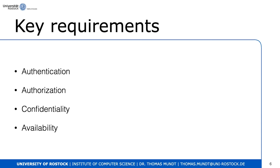Confidentiality means keeping secret information within a desired group of recipients — not everybody can read the message, only the intended audience. Availability is another key requirement: the system works whenever we need it. In building automation, availability is critical because if the air conditioning, heating, or lighting fails, we have a problem.